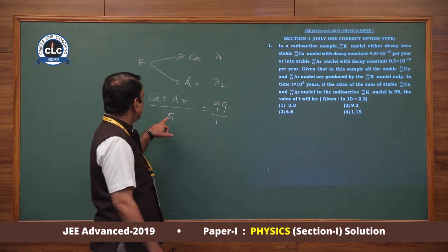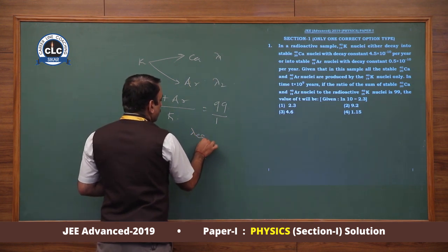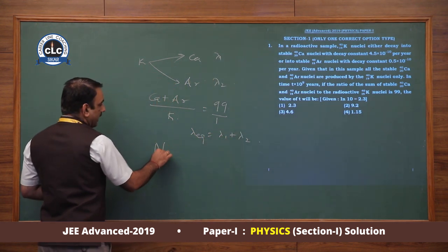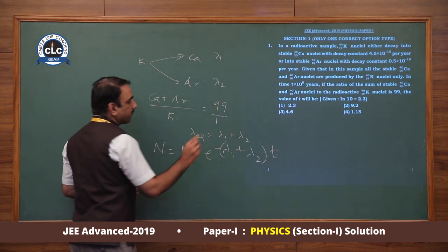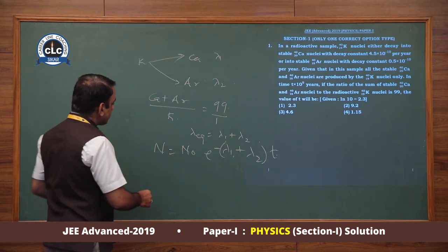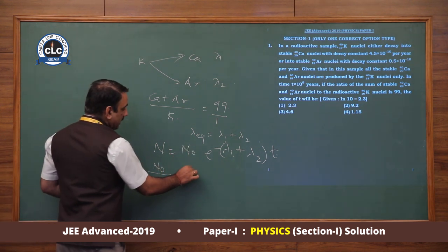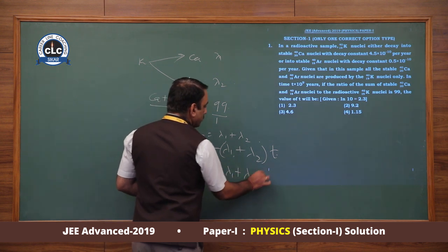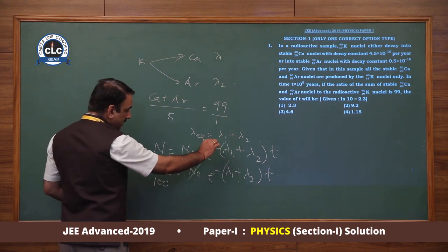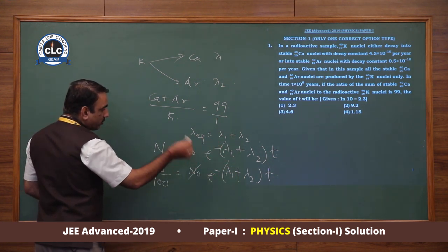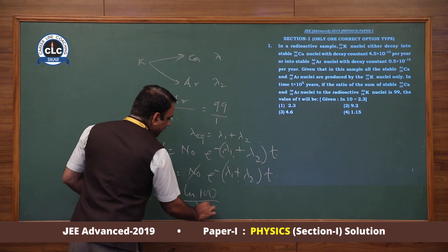This means after decay we have one part remaining. That is 1% of the total, so N = N0 e^(-lambda1 + lambda2)T. This gives us 1/100 = e^(-(lambda1 + lambda2)T). Taking log, we get T = ln(100)/(lambda1 + lambda2), which equals 2.3 × 2/(lambda1 + lambda2).